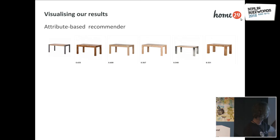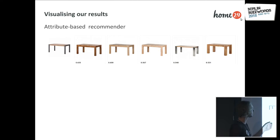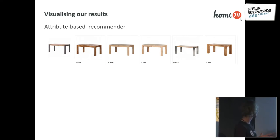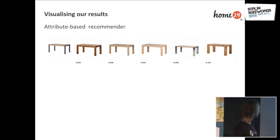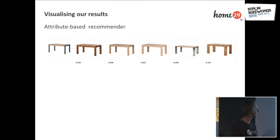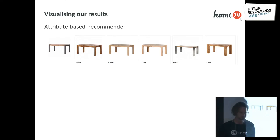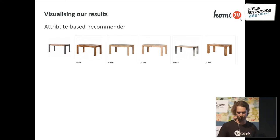What we have here is, on the left, the product we want recommendations for, and these are the top five picks of the attribute-based recommender. We see that they're all tables, all roughly the same style, size, shape — already pretty good recommendations. But maybe since the product we want recommendations for has a wooden top and metal legs, maybe this recommendation here might actually be a better match than these four here. So this is already suggesting there's some space for improvement.